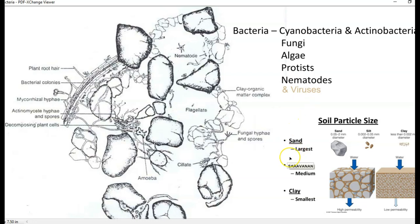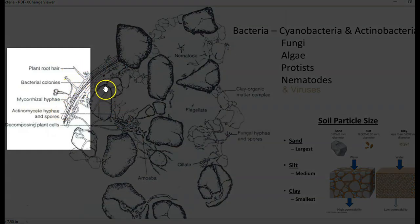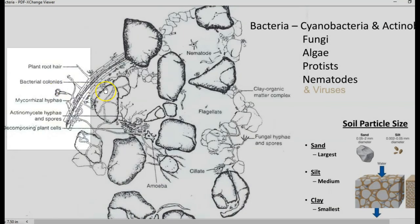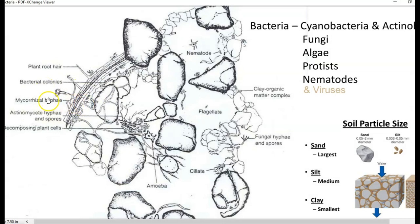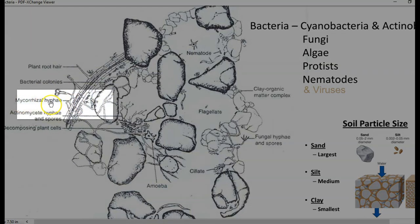If you look into this diagram you can find what are the portions in which different types of microorganisms have been present. You can see the root surface here and root hair. Then you can see the bacterial colonies adhering to the roots. You can see hyphae that is of mycorrhizal origin.